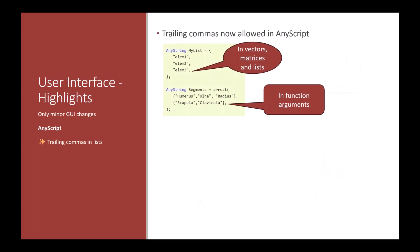The AnyScript language has changed a little bit. One of the new things is that we support this trailing comma. A trailing comma in lists and matrices and function arguments is the last comma after the last element. It's a small thing, but it makes it much easier to switch elements, add or remove the last element in the list without getting syntax errors.